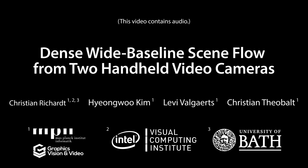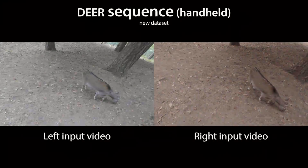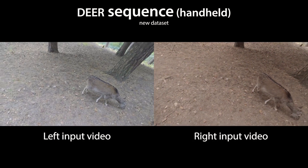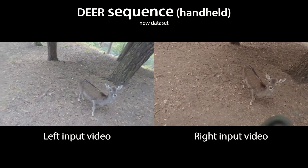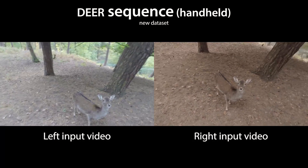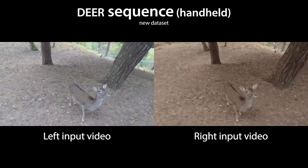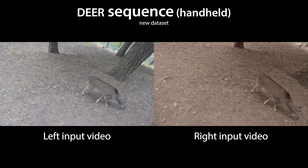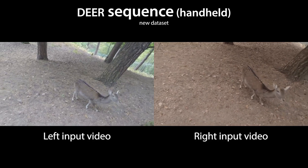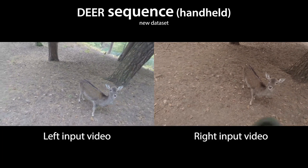We propose a new technique for computing dense, wide baseline scene flow from two handheld video cameras. The input to our method are two videos captured by two independently moving cameras with potentially different camera and sensor characteristics, such as exposure or white balance.